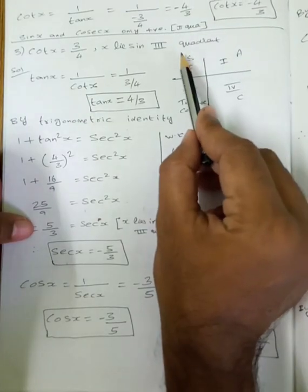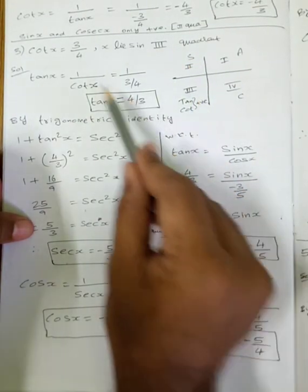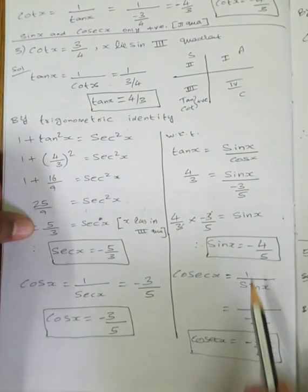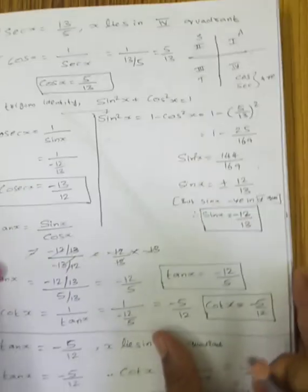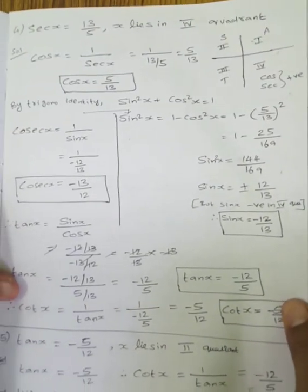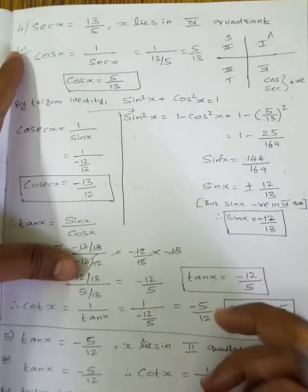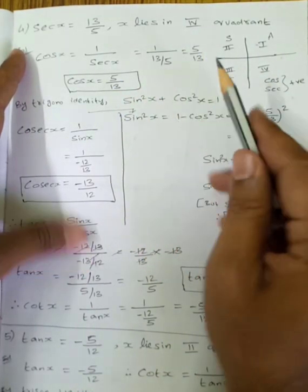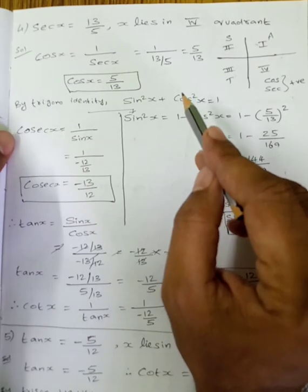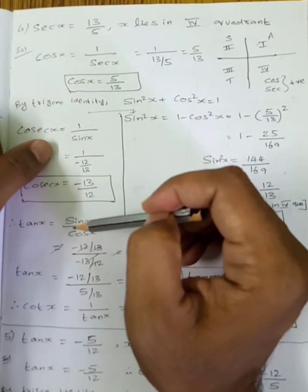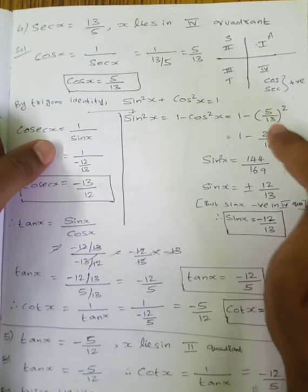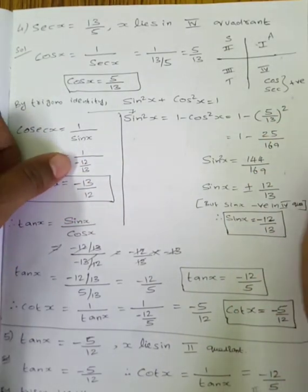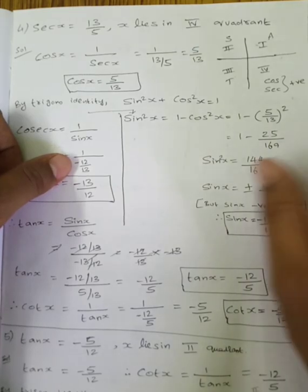Summary for this quadrant: third quadrant is positive for tan and cot; remaining all are negative. The concept is: whatever quadrant is given, that quadrant's specific functions are positive; remaining all are negative. We use three trigonometric identities: sin²x plus cos²x equals 1; 1 plus tan²x equals sec²x; 1 plus cot²x equals cosec²x.